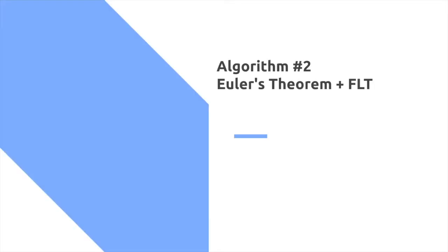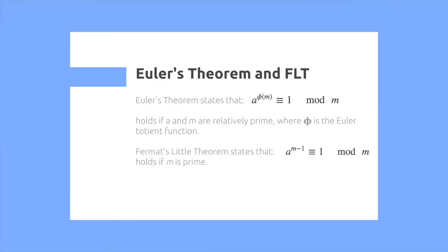The second algorithm is Euler's theorem plus Fermat's little theorem. Euler's theorem states that a to the phi of m is congruent to 1 mod m, which holds if a and m are relatively prime, where phi is the Euler totient function. Fermat's little theorem states that a to the power of m minus 1 is congruent to 1 mod m, which holds if m is prime.